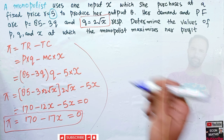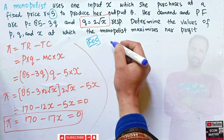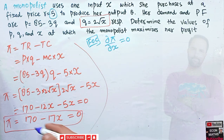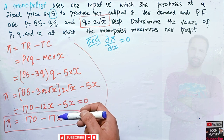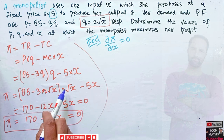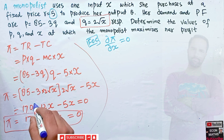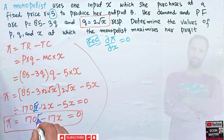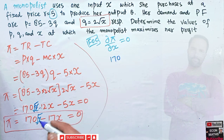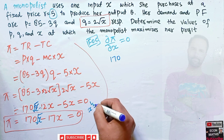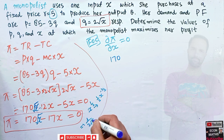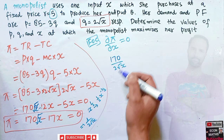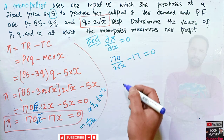The first order condition for profit maximization requires that d-pi upon dX should equal zero. Taking the derivative of the profit function 170 under root X minus 17X: the derivative of under root X can be written as X to the power one-half, whose derivative is 1 upon 2 X to the power minus one-half, which equals 1 upon 2 under root X. So the first derivative is 170 times 1 upon 2 under root X minus 17, set equal to zero.